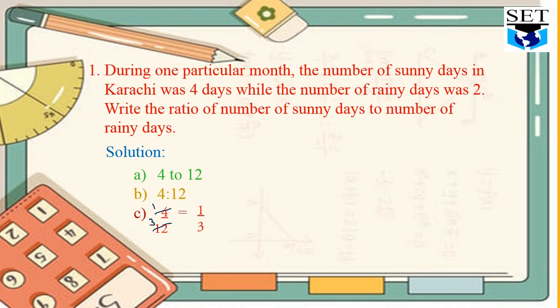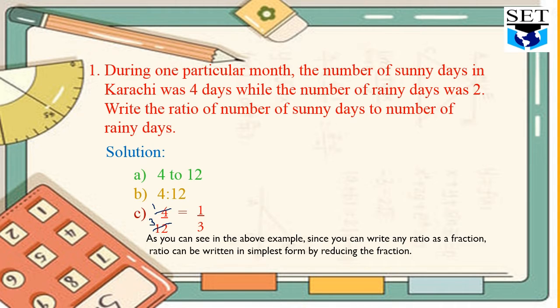All of these are correct ways to write a ratio. As you can see in the above example, since you can write any ratio as a fraction, ratio can be written in simplest form by reducing the fraction. Here we have reduced the fraction in part C.